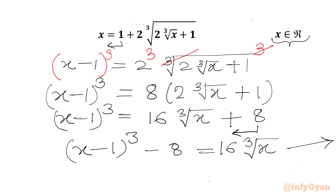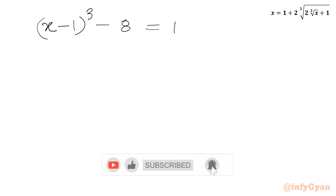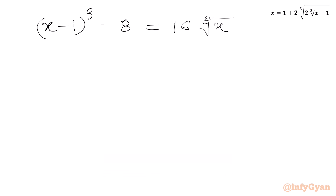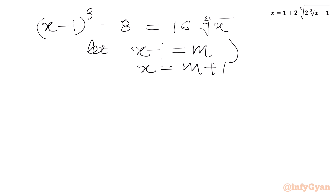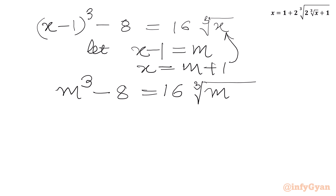Now we will consider our substitution. Let us take x minus 1 equal to m. So I can write the value of x from here as m plus 1, which we will apply here. The LHS will give us m cubed minus 8, and the RHS will become 16 times cube root of m plus 1.